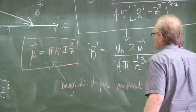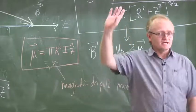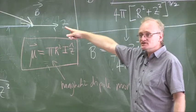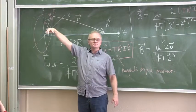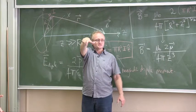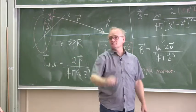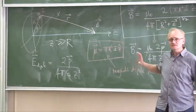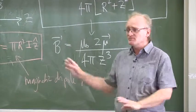The direction of ẑ is given by the right-hand rule: curl your fingers in the direction the current flows in the hoop, and your thumb points in the direction of the magnetic moment. That was an application of Biot-Savart. Any questions on how we applied Biot-Savart?